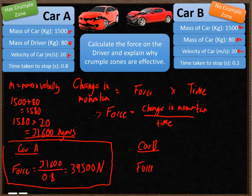So the force on car B or the driver in car B is equal to 31,600, the same momentum that we had before. We'll divide that by the time, 0.2. And that gives me a total force of 158,000 newtons.